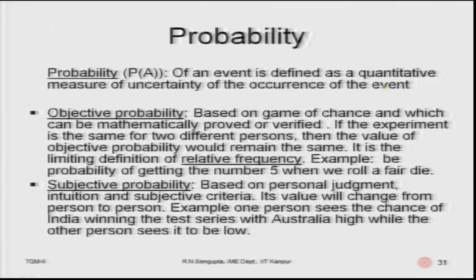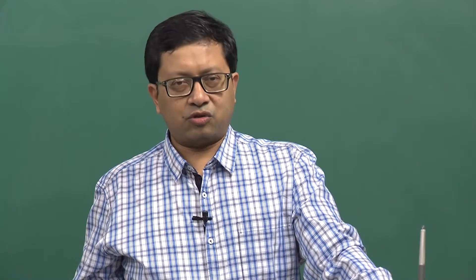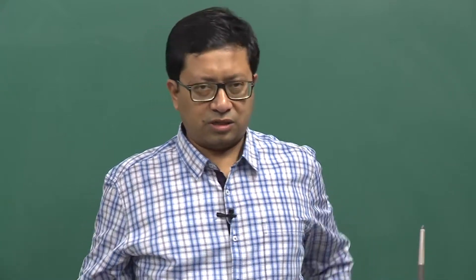Probability of an event is a quantitative measure of the uncertainty of its occurrence. Objective probability is defined on games of chance and can be mathematically proved. If the experiment is the same for two different persons, the objective probability value remains the same. It is the limiting definition of relative frequency — as the number of observations increases to infinity, the limiting ratio is the probability.